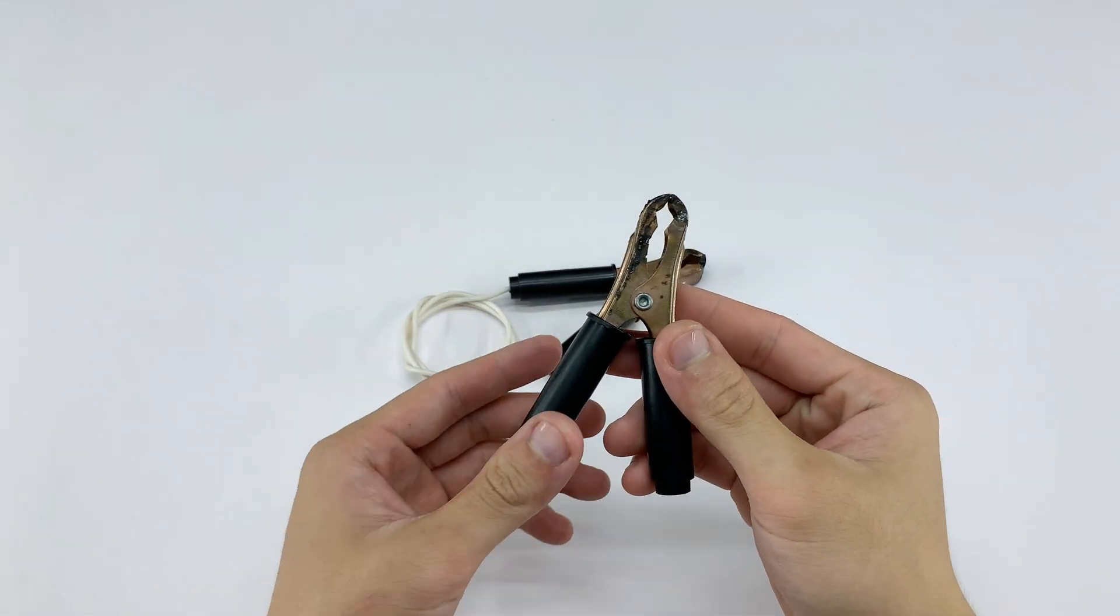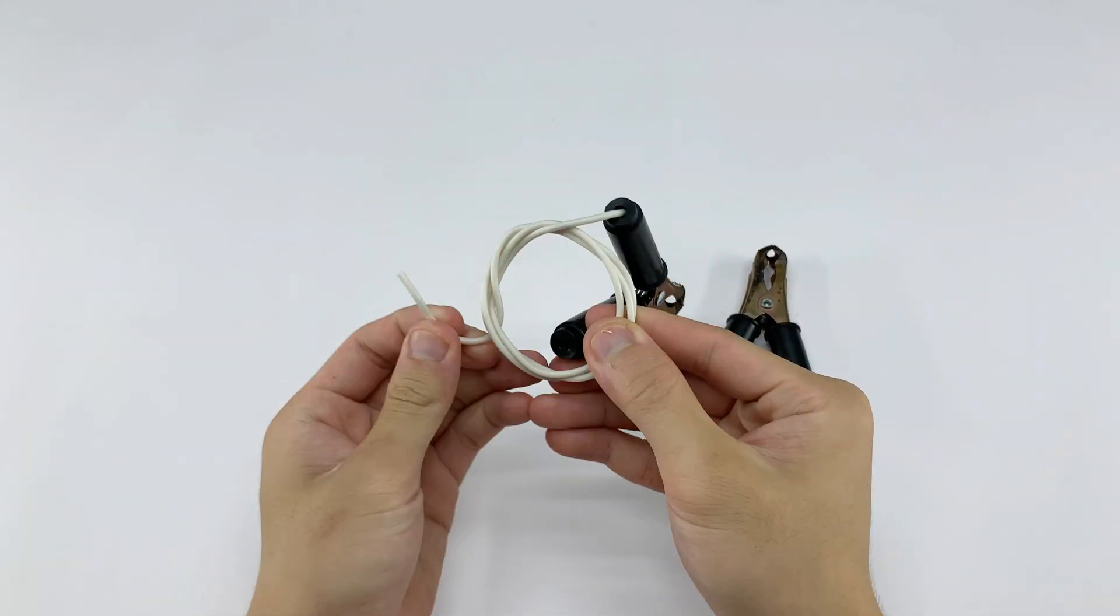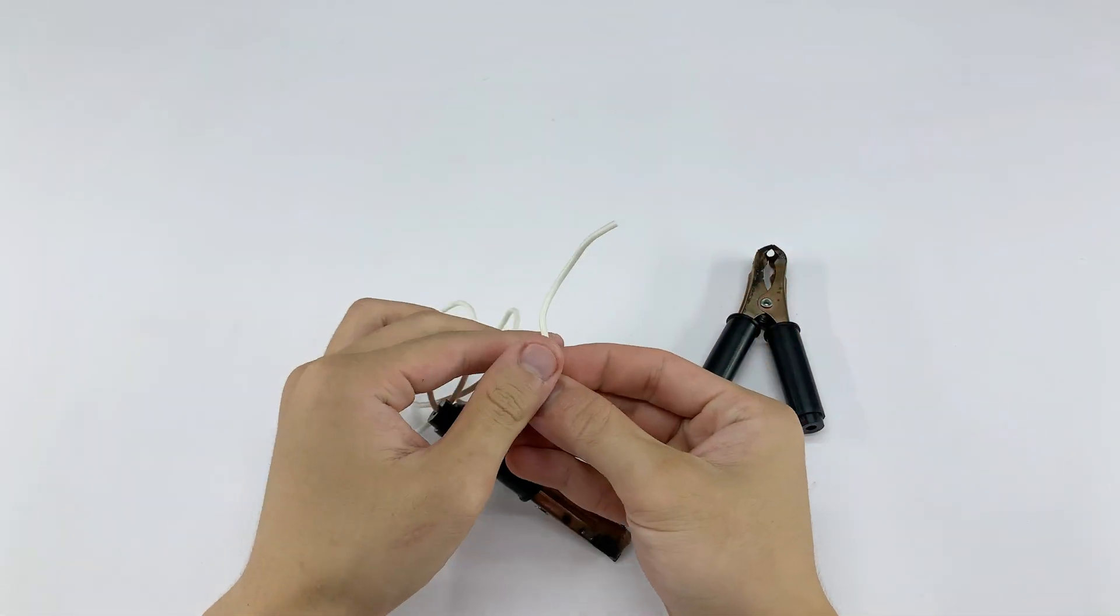Of course we can't skip this. A wire with two ends attached to two alligator clips. This will connect to the negative terminal of the power source.